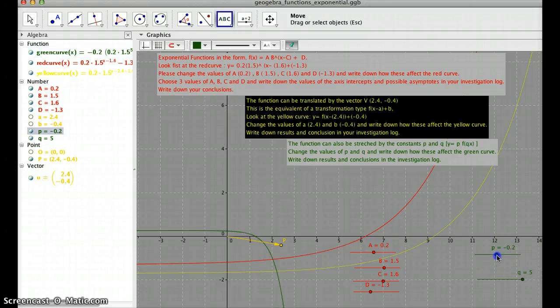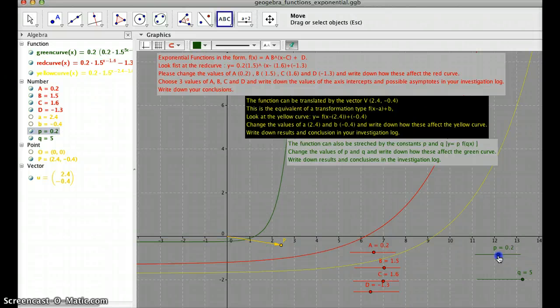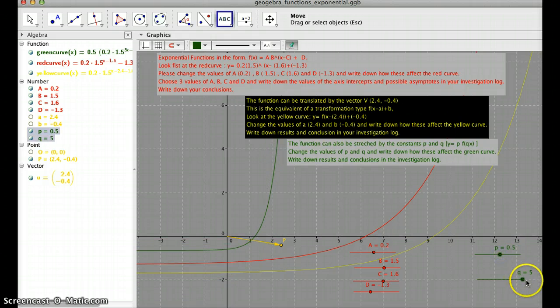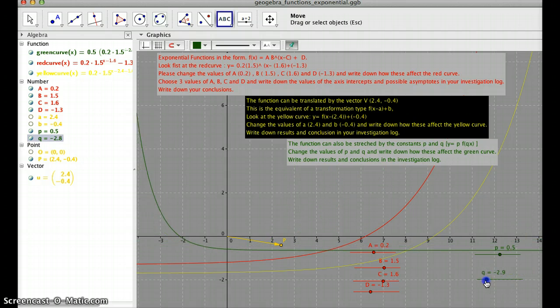Obviously, if p has negative values, the whole thing is negative. But then when it has positive values, we can kind of stretch it that way in the y-axis. And then the same thing as it goes for the x-axis. And it can also be negative. This is all for the exponential functions.